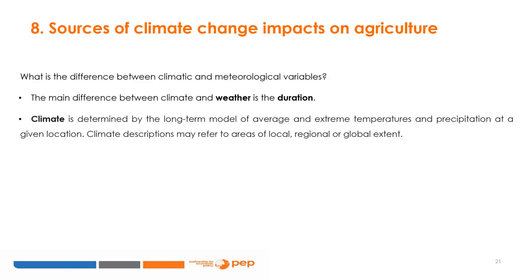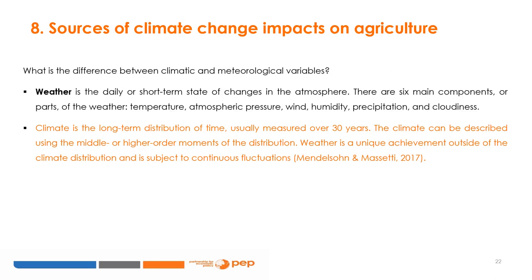Let us now turn our attention to the sources of climate change impacts on agriculture. The literature distinguishes climate sources from meteorological sources. The main difference between climate and weather is the duration. Climate is determined by long-term modeling of average and extreme temperatures and precipitation at a given location, and may refer to areas of local, regional, or global extent. Weather reflects the daily or short-term state of changes in the atmosphere. There are six main components of weather: temperature, atmospheric pressure, wind, humidity, precipitation, and cloudiness.